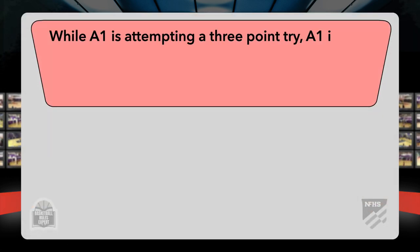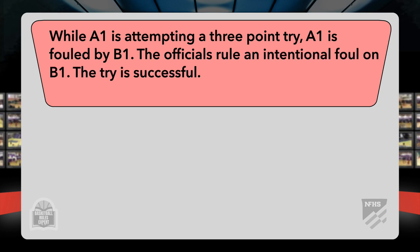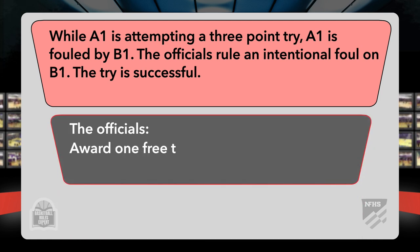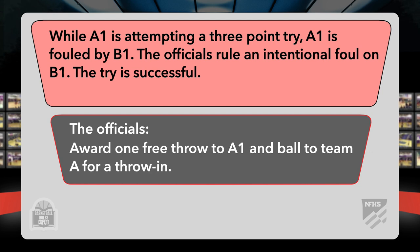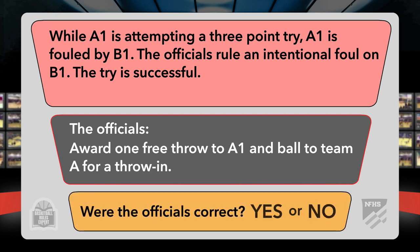While A1 is attempting a three-point try, A1 is fouled by B1. The officials rule an intentional foul on B1. The try is successful. The officials award one free throw to A1 and the ball to Team A for a throw-in. Were the officials correct? Yes or no?